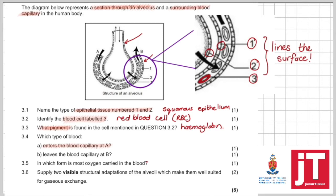So I would say blood entering the blood capillary at A would be my deoxygenated blood and the blood leaving the blood capillary at B would then have been oxygenated through that whole gas exchange process taking place at the alveoli, between the blood capillary and the alveoli.